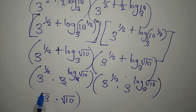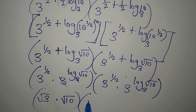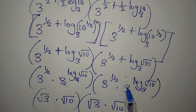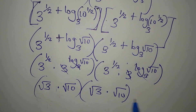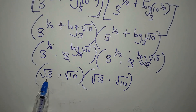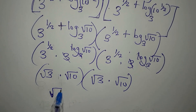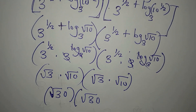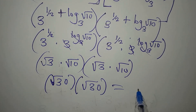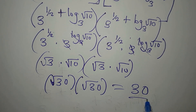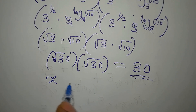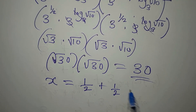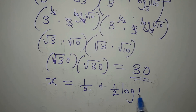Multiplying the two brackets: square root of 3 times square root of 10 is square root of 30, and square root of 30 multiplied by square root of 30 gives us 30. This confirms that our answer is correct: x equals one half plus one half log 10 to base 3.